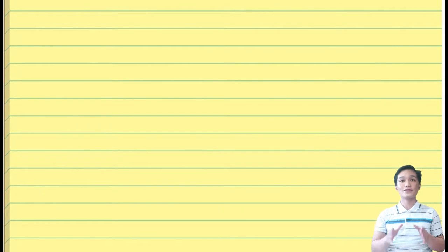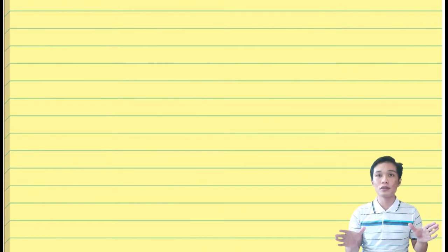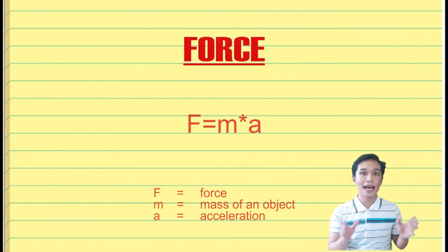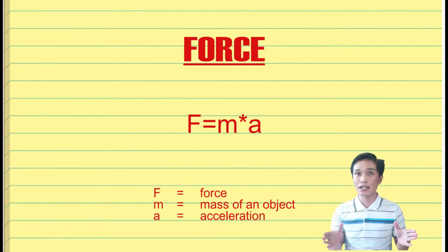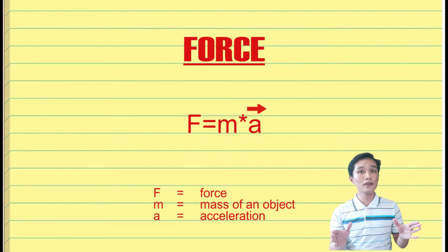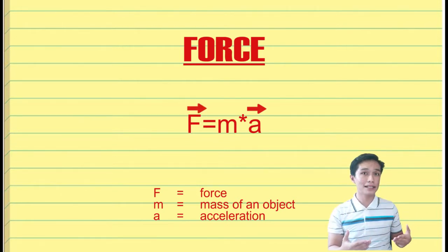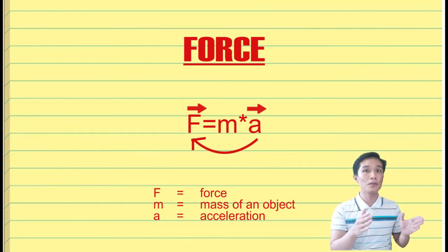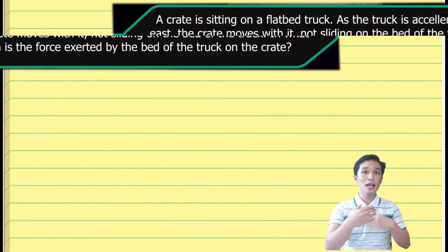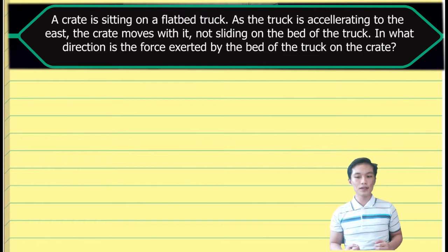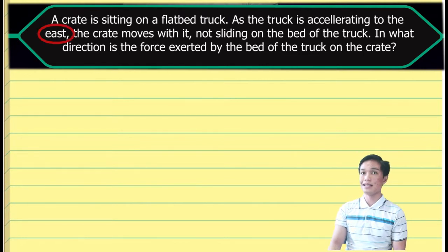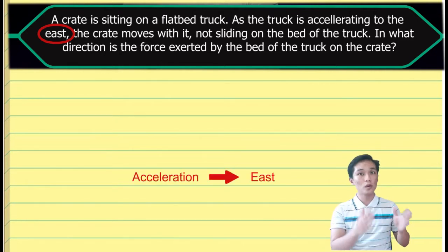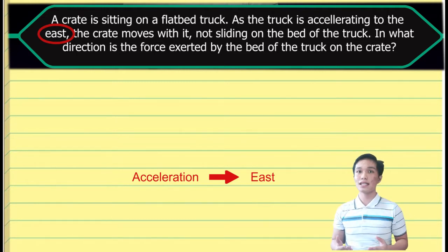To answer this, it's very simple. You just have to understand what force is. Force is a function of mass and acceleration. Acceleration is a vector quantity, making force also a vector quantity. Knowing that mass is just a scalar quantity, we get the direction of the force from the direction of the acceleration. Since the truck accelerates to the east, the acceleration is going east, and therefore the direction of the force is also east.